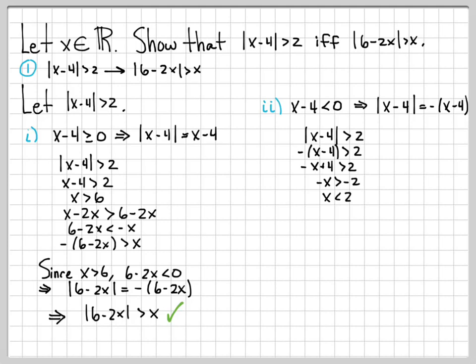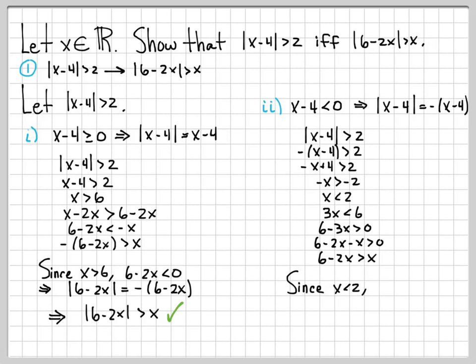Multiplying both sides by negative 1 and flipping the inequality gives x is less than 2. Multiplying by 3 gives 3x is less than 6. Moving 3x to the right gives 6 minus 3x greater than 0, which we can write as 6 minus 2x minus x greater than 0, then move x to the other side. Since x is less than 2, we know 6 minus 2x is always positive. Since 6 minus 2x is positive, it equals its own absolute value, so we can conclude the absolute value of 6 minus 2x is greater than x.